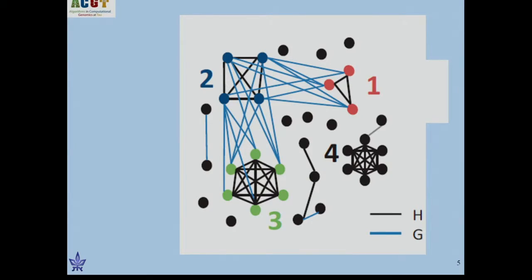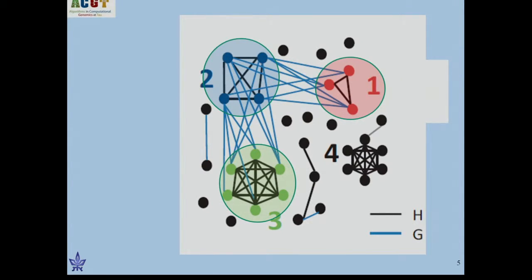Here is an example. The black edges are in H, and the blue edges are in G. We are looking for modules — like these three — that are highly interconnected in H, so think of them as clusters in H. They should be connected by links which are highly interconnected sets in the blue graph G. We want to avoid singletons — clusters in H which are not connected to anything in the second network.